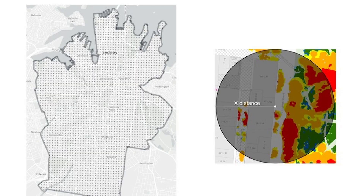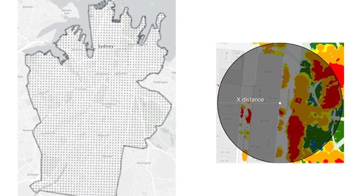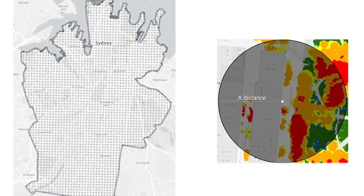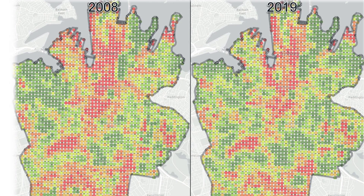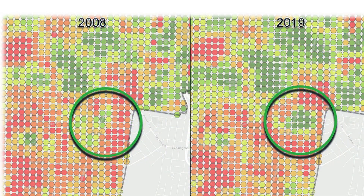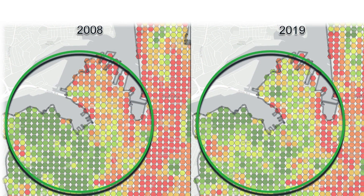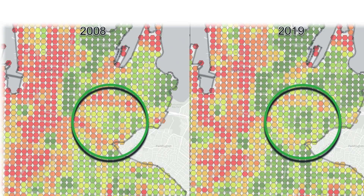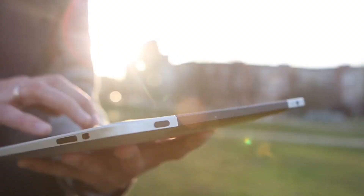By creating a 100 by 100 meter fishnet, we've got two and a half thousand points across our city where we can conduct this spatial analysis. At each reference point we gather the data and summarize using the 400 meter and the 1600 meter buffers from the research.